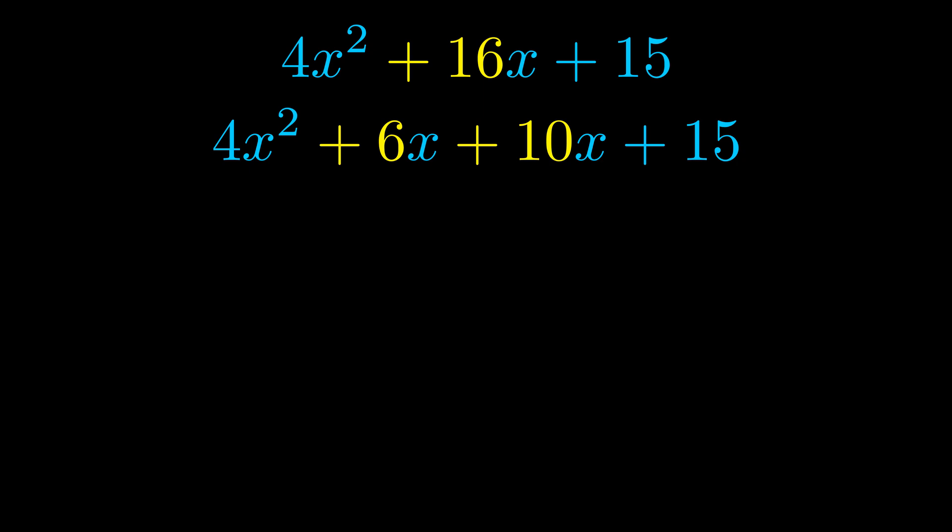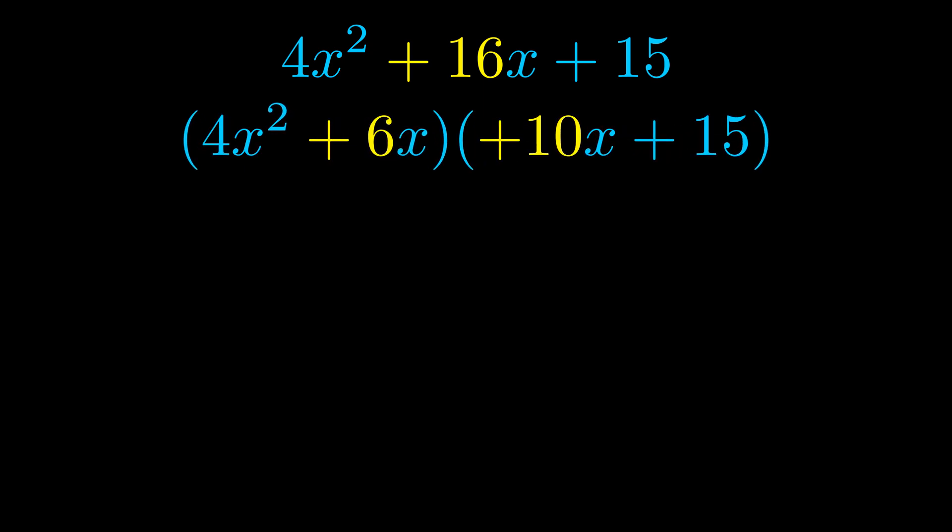Once we've done this we put parentheses around the first term and the last term, and we do that so that we can take the greatest common factor out of both terms. We can see the greatest common factor is now outside in green. Notice also how what remains inside of the parentheses is the same in both cases. The blue values are the same.